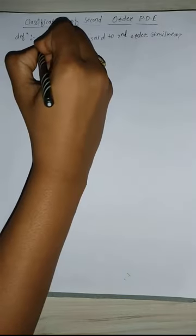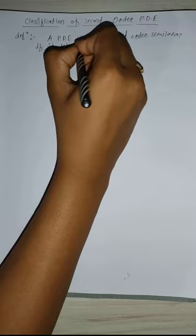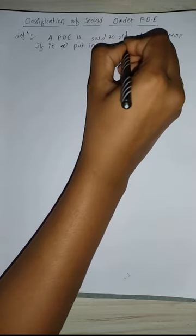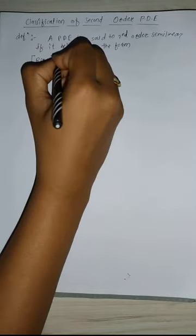When will we say semi-linear? The general form is G(x, y, u, u_x, u_y) = 0, which gives equation number 1, where r² + s² + t² ≠ 0. And r, s, t are the continuous functions of x and y.